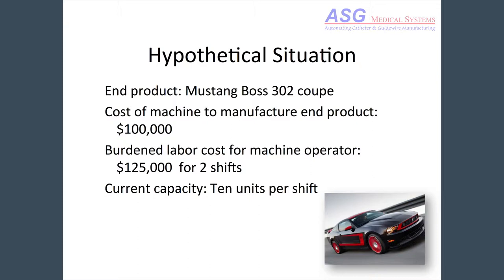Let's talk about a hypothetical situation. Let's say you want to produce a new Mustang Boss 302 Coupe. Burden labor is typically $30 an hour in the U.S. — that could be $70 in Bavaria if you were building BMWs, or maybe $6 in Costa Rica. Running a two-shift operation, that's $125,000 a year to staff one operation with one operator per shift, and current capacity is 10 cars per shift. Have you ever had this conversation? Your boss says: 'By this time next year, I want you to double output and cut cost by half while increasing quality and yield.' Yesterday you might have said 'I quit.' Today you can say, 'I was hoping you'd ask. No problem.'